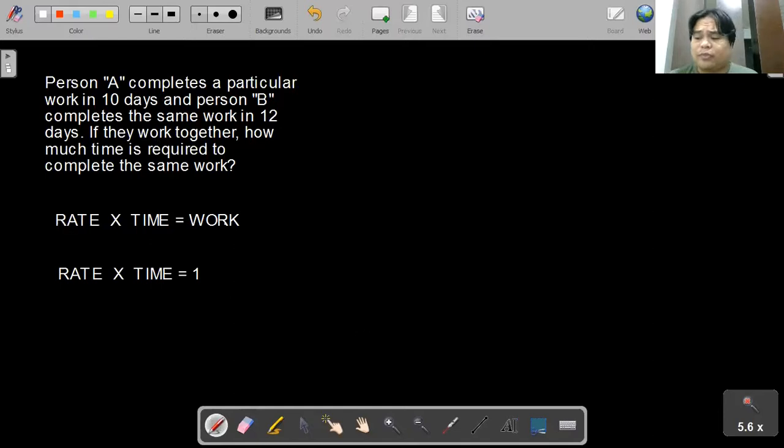So first we need to get the rate of each person. The rate of person A is 1 over 10. Actually, it is just the reciprocal of the amount of time it took him to complete one job. If he completes one job in 10 days, then his rate on a daily basis is 1 over 10.